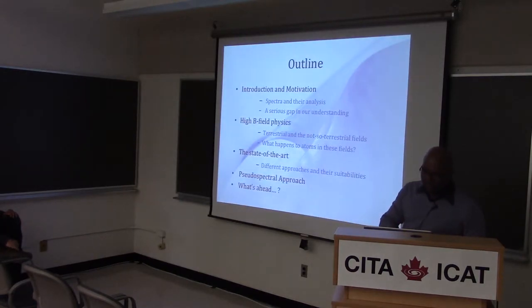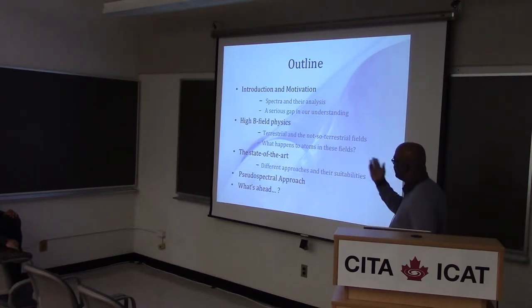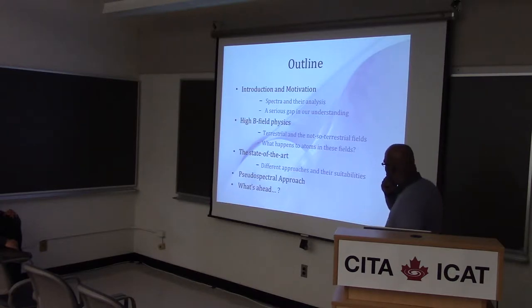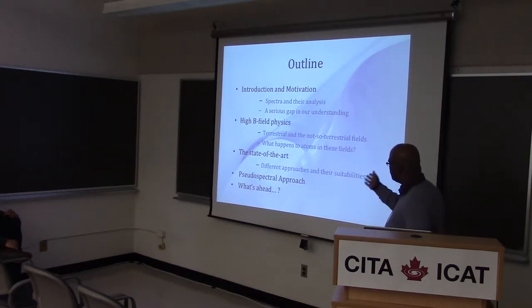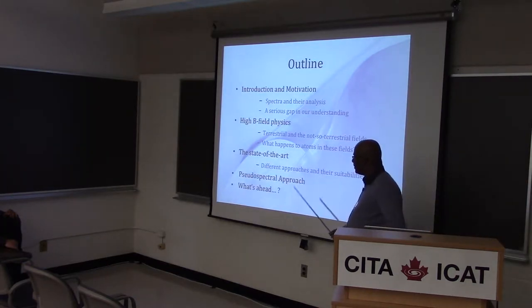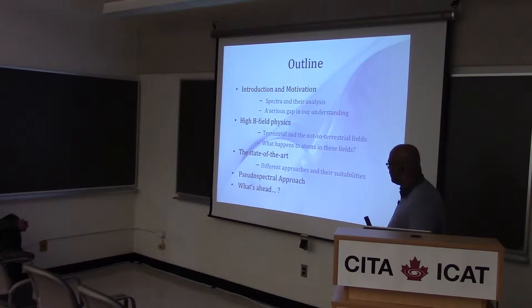I'll structure the talk simply: first about spectra and gaps in our understanding, then about high B field physics related to atomic structure, what we can do terrestrially with high magnetic fields, and astrophysical laboratories and compact objects. Then I'll get into what happens to atoms in really strong magnetic fields, different approaches, the state of the art, and my own work using pseudospectral methods as applied to atomic structure.